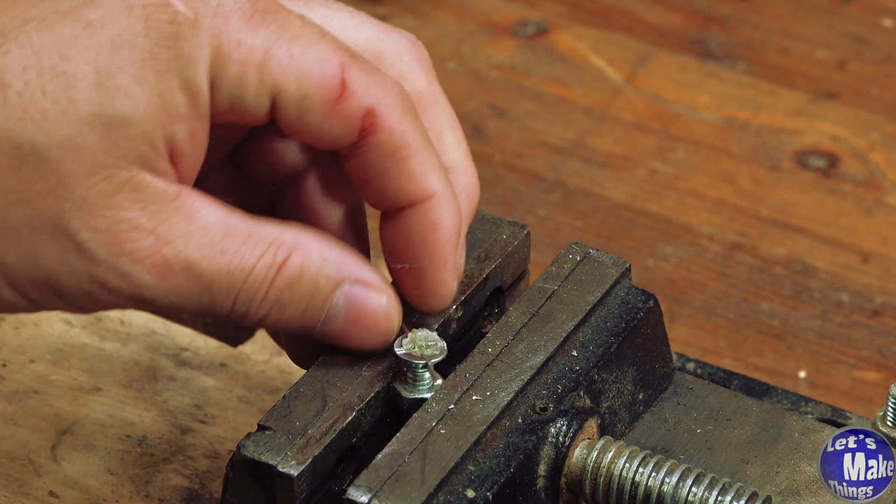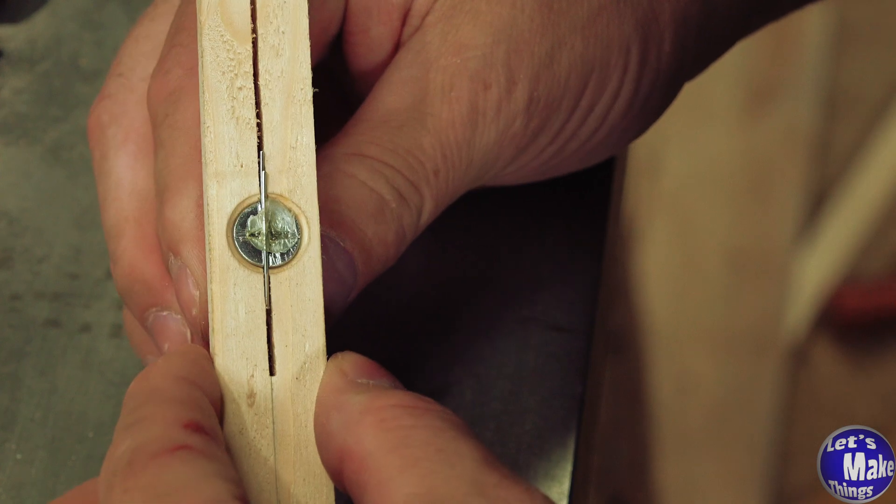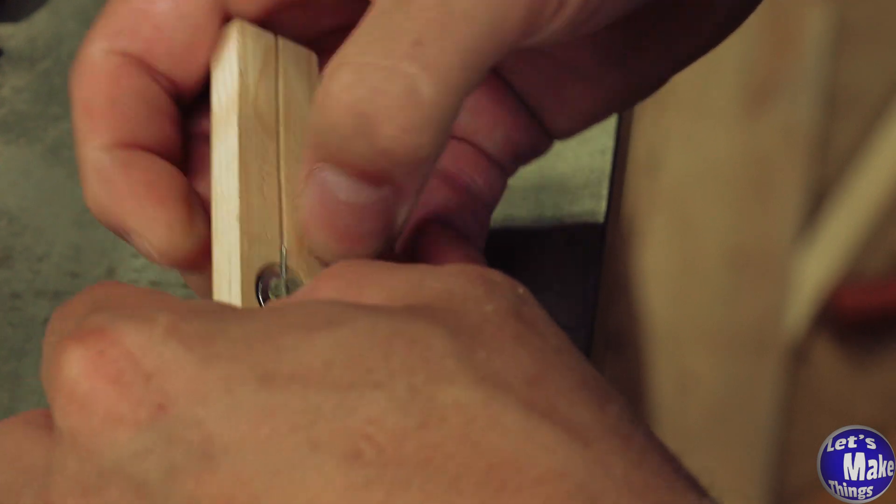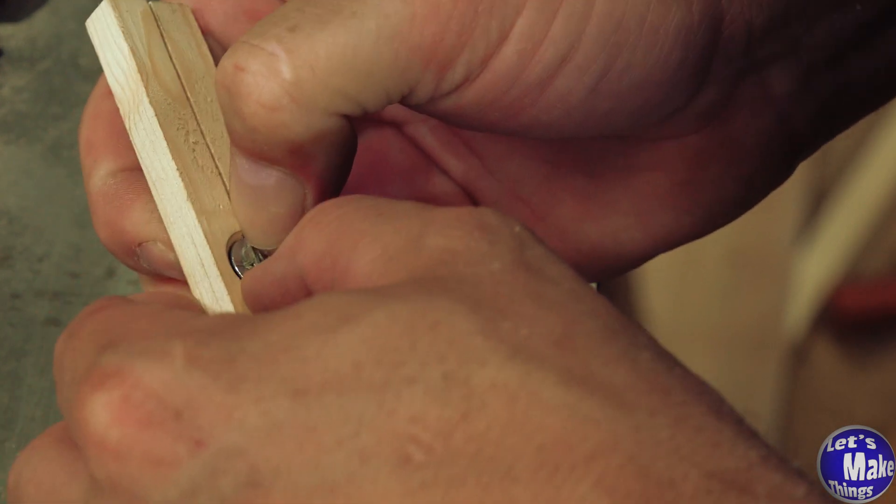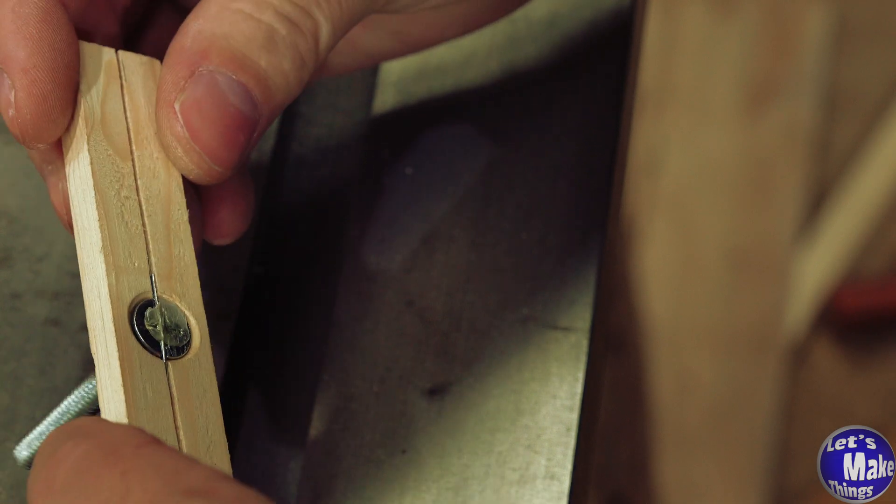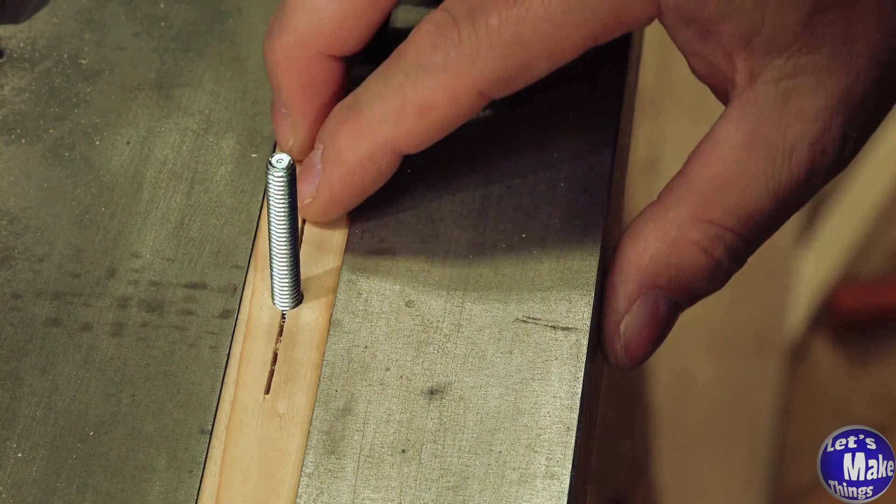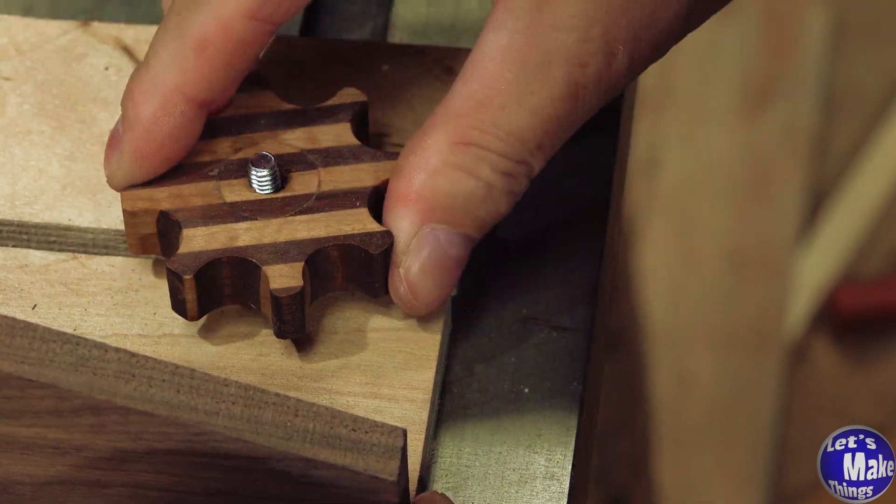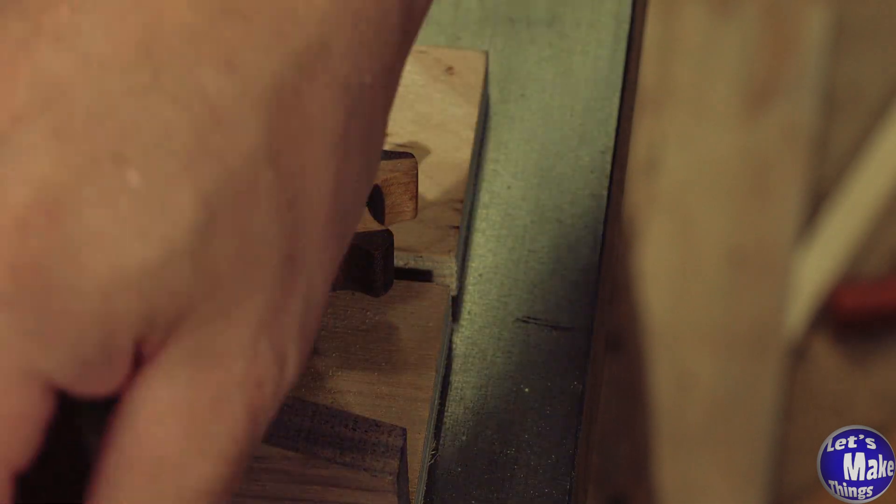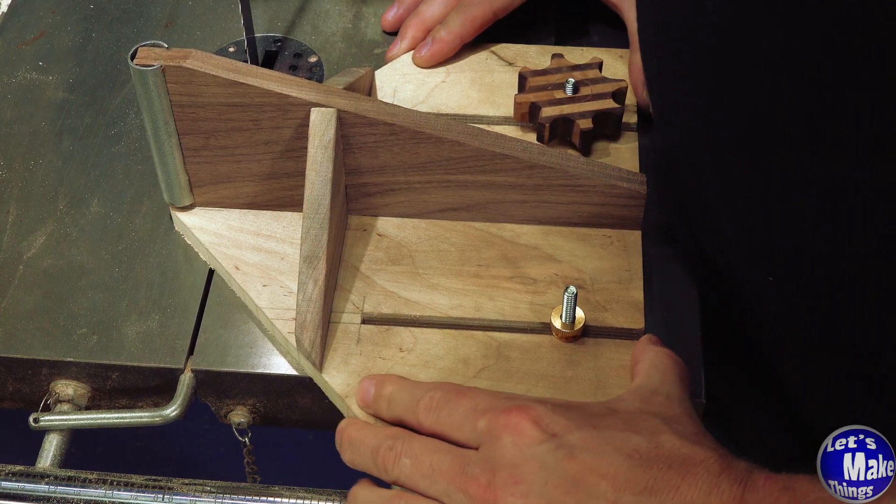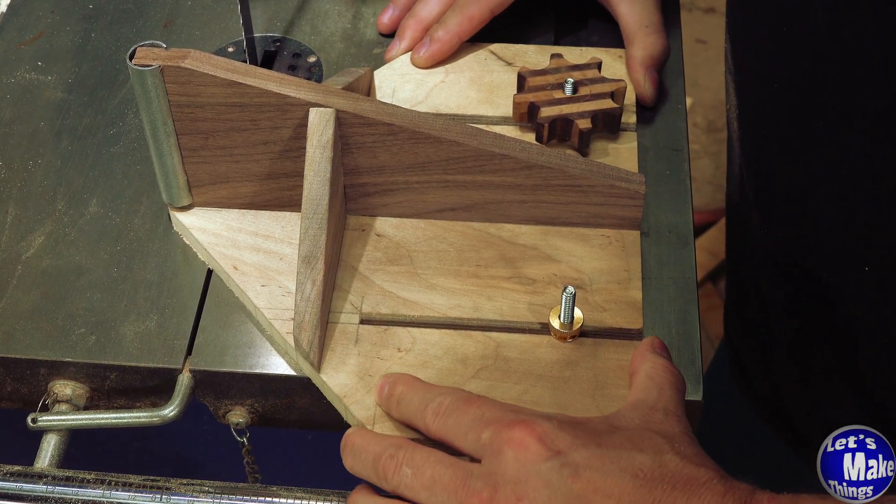So let's take it back over to the bandsaw. Now you can see that this just slides right in place. It needs to be inside the groove, but there we go. That will tighten and not have any problems now. And that is pretty tight in there. And that is really locked in place. I don't have to worry about that moving.